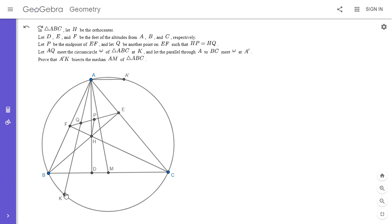And A' is the intersection of the parallel through A to BC with the circumcircle. And we want to show that A'K bisects the median AM of triangle ABC.